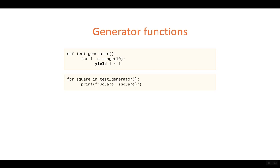And if we want to consume this data, we are simply saying for square in test generator, we are printing that information. So let's try it out in our code.